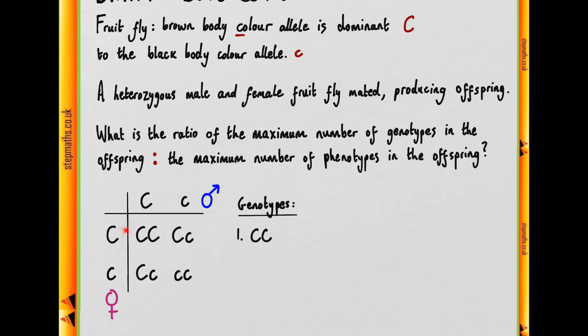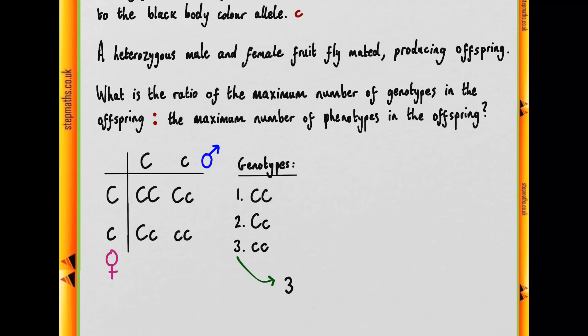We have a homozygous dominant, a heterozygous, and a homozygous recessive genotype. So we have three different genotypes.